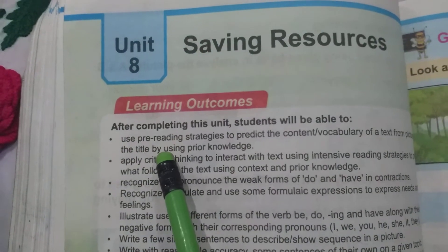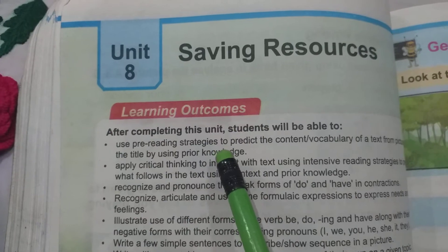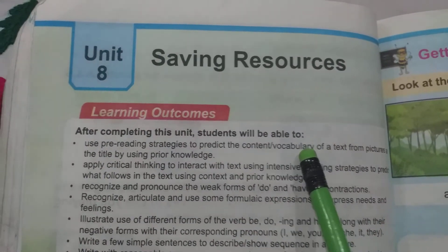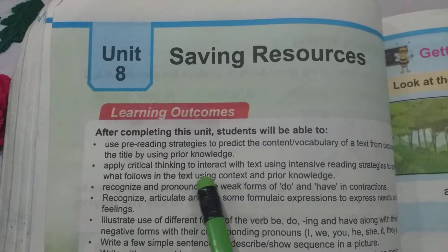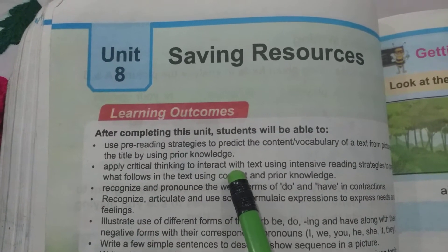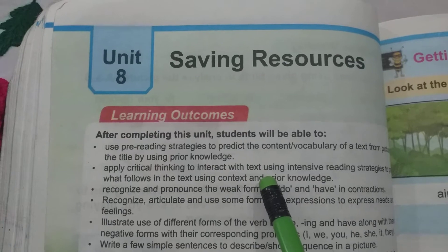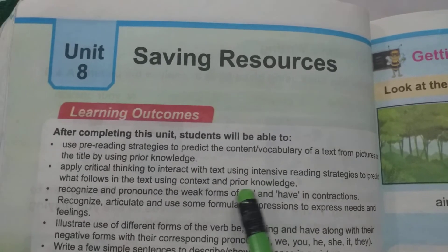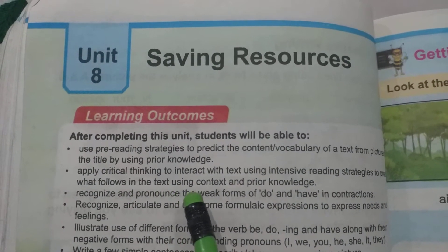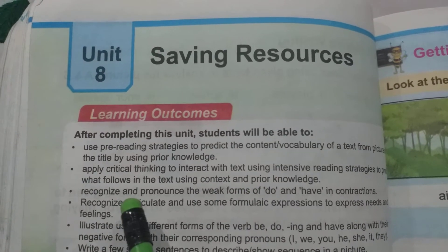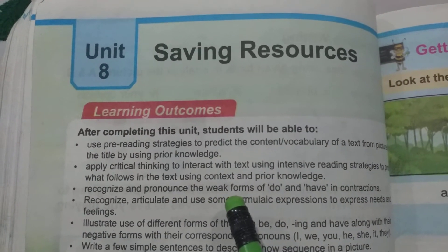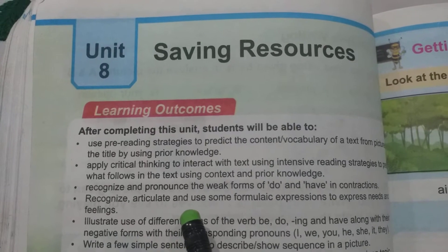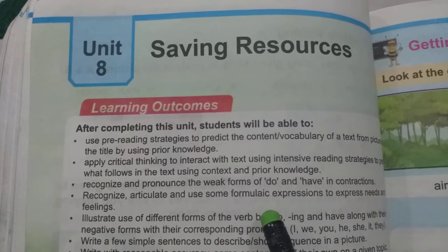Pre-reading strategies to predict the content, vocabulary of text from picture as a title by using prior knowledge. Apply critical thinking to interact with text using intensive reading strategies to predict what follows in the text using context and prior knowledge. Recognize and pronounce the weak form of 'do' and 'have' in contractions.